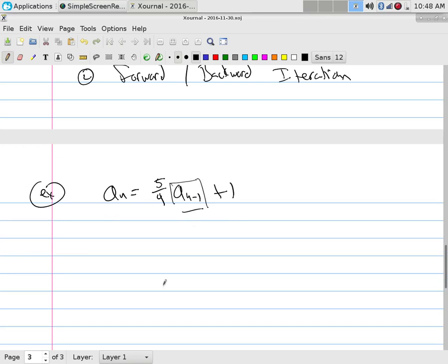The iteration says that this formula always works. If a number is 5/4 of the number before plus 1, what is a_(n-1)? It is 5/4 of the number before, which is a_(n-2) plus 1.